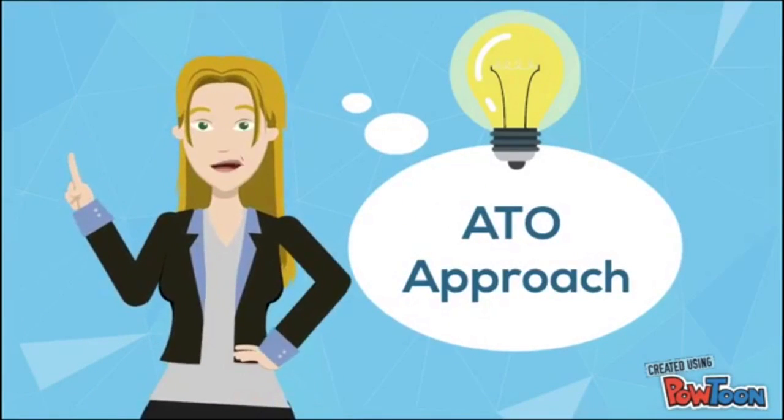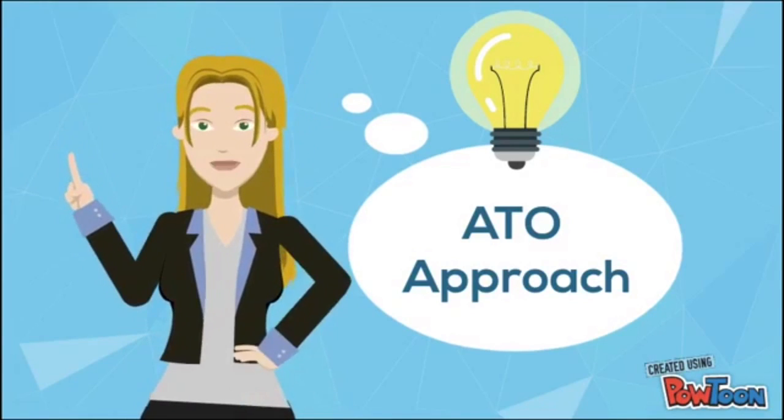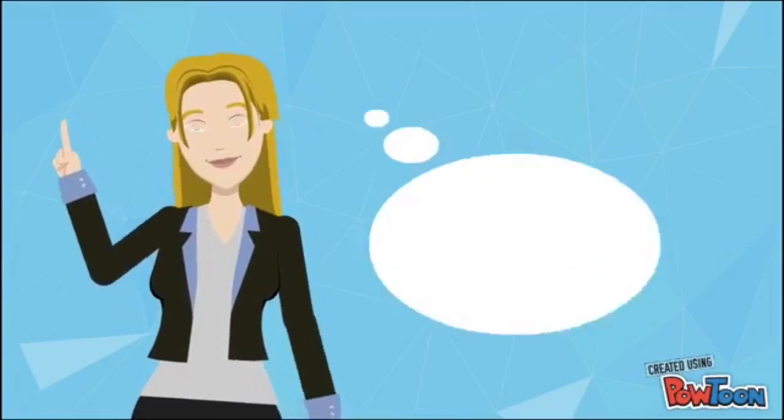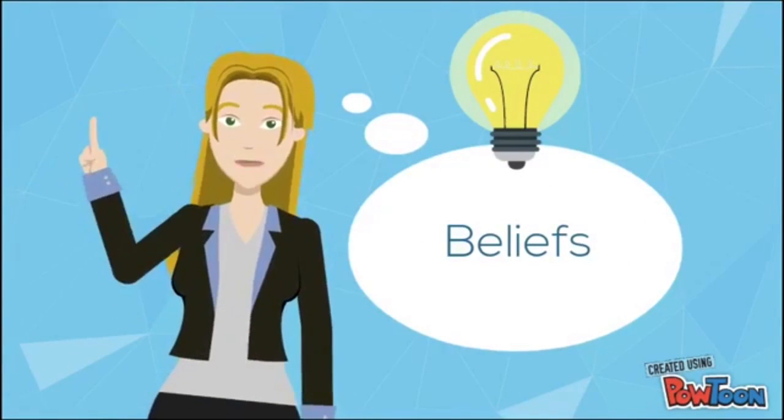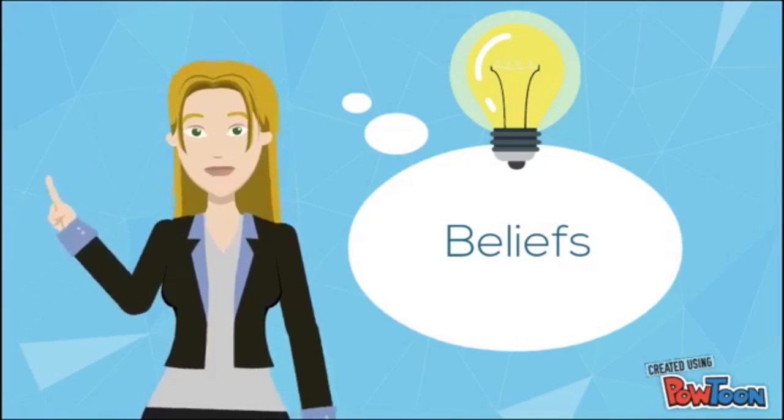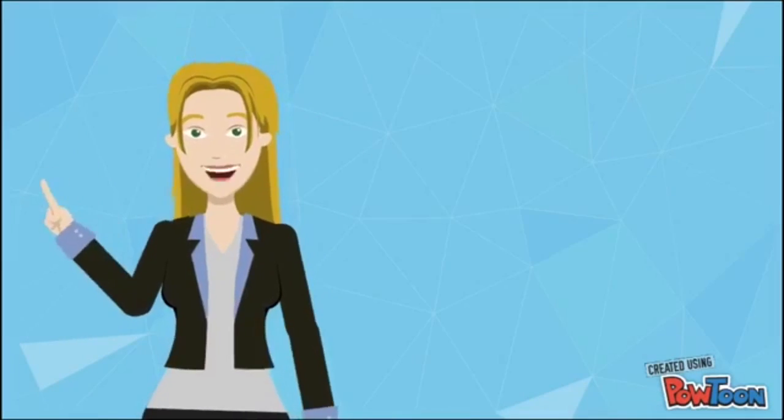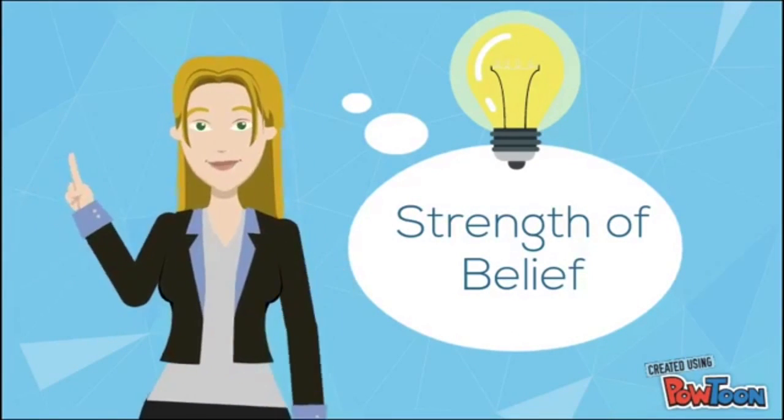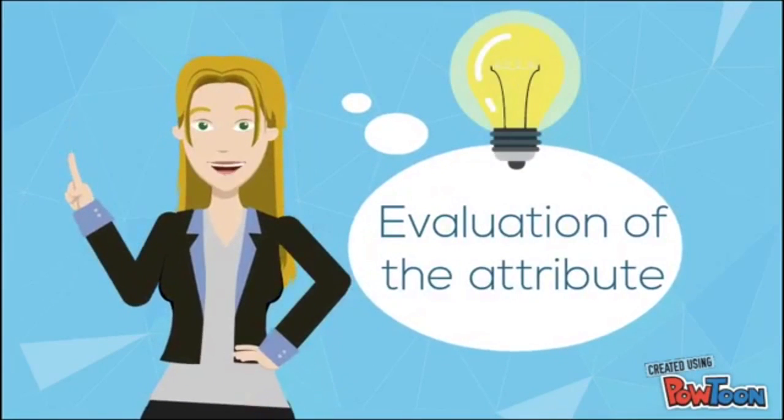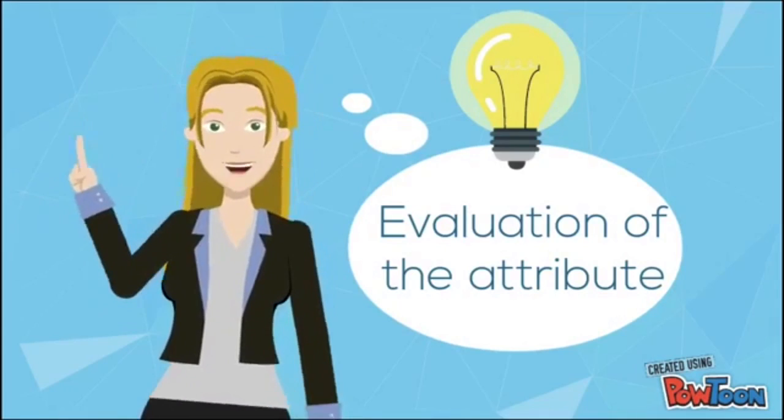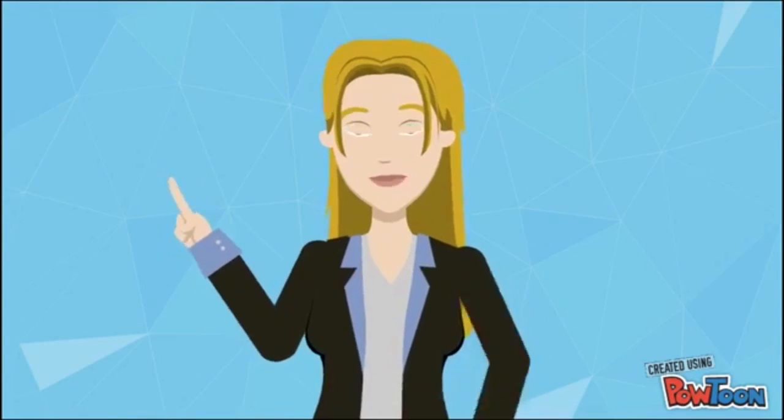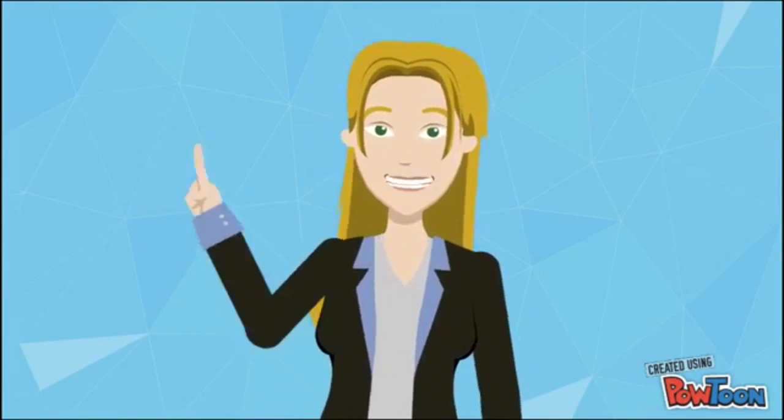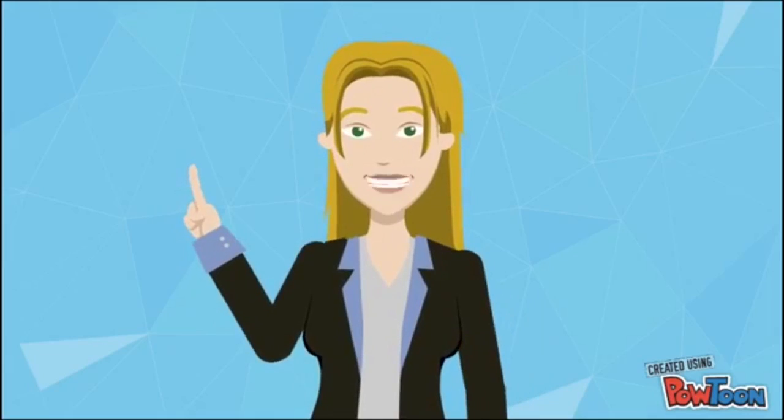The attitude toward the object model proposes that three key elements must be assessed to understand and predict a consumer's attitude. The first element consists of the beliefs a consumer has about a salient attribute or feature that the consumer thinks the product should possess. The second element is the strength of the belief that a certain brand does indeed have the feature. The third element is an evaluation of the attribute in question. These elements are combined to form the overall attitude toward the object. This approach is known as a multi-attribute approach because consumers consider a number of attributes when forming attitudes in this way.